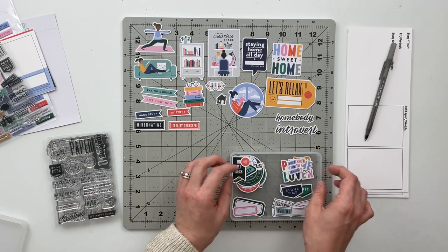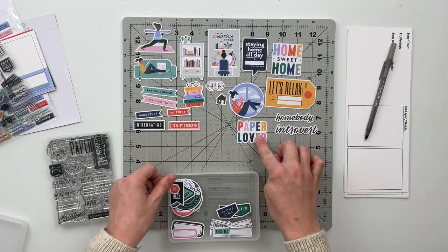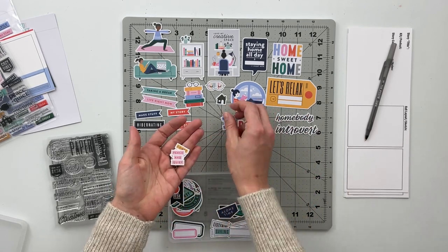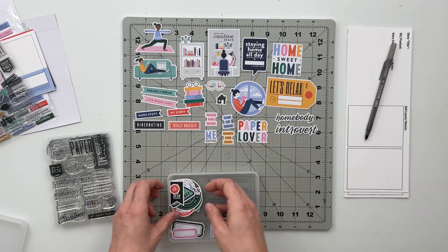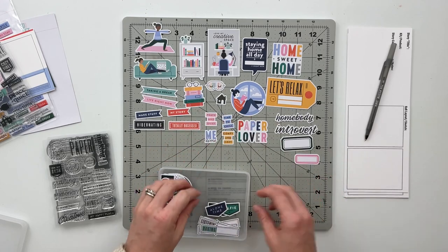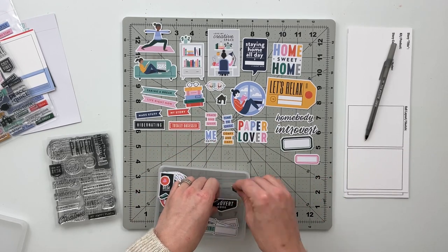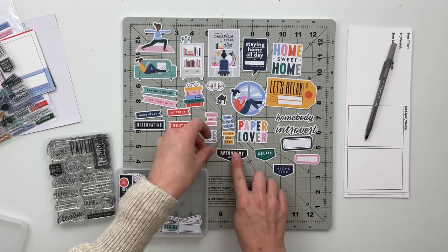Then we've got some more like word type ones. We've got paper lover, time to chill, peace and quiet, comfy and cozy, me time, a few just a few blank labels, a pink one and a green one, a couple of banners. So selfie, alone time, introvert mode.